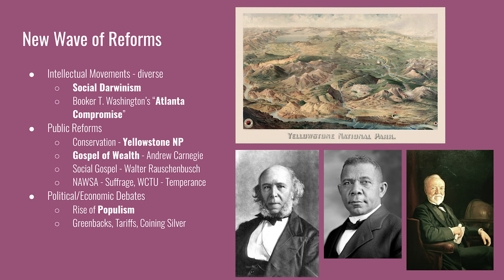Public reforms also varied. As industrial growth began impacting the environment, the conservation movement advocated for the protection of natural spaces. The first national park, Yellowstone, was established in 1872. The Gospel of Wealth, proposed by Andrew Carnegie, held that wealthy people should give away part of their wealth through philanthropic endeavors—Carnegie donated millions to build libraries, performance halls, and a university. The Social Gospel movement wanted to apply Protestant ideas to help those in need. Movements carrying over from the 19th century include women's suffrage and temperance. The National American Women's Suffrage Association was established by leaders like Susan B. Anthony, Elizabeth Cady Stanton, and Carrie Chapman Catt. The Women's Christian Temperance Union was founded in 1874 under Frances Willard. The rise of populism, with its focus on inflationary policies like coining silver and using greenbacks, also marks the new political debates of the period.